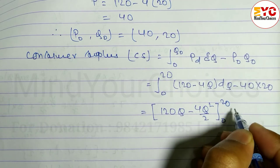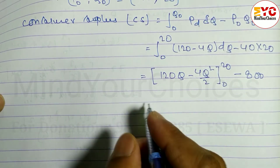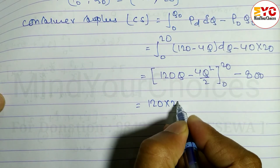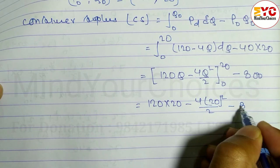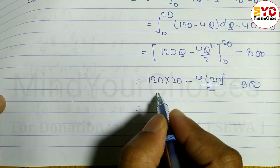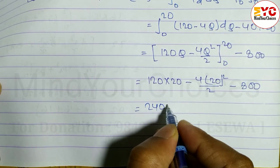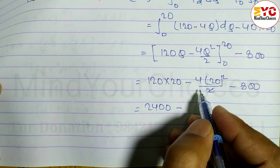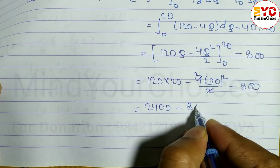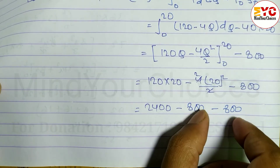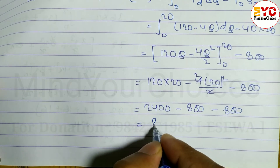Putting Q = 20: 120 × 20 - 4 × 20²/2, minus 800. That is 2400 - 4 × 400/2 - 800 = 2400 - 800 - 800 = 800. So consumer surplus CS = 800.